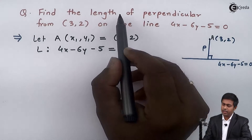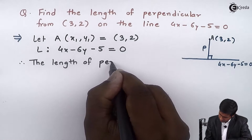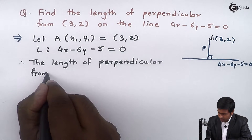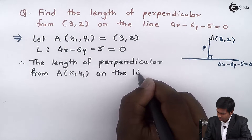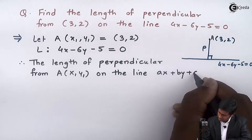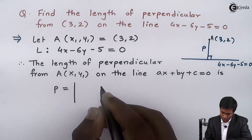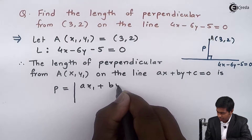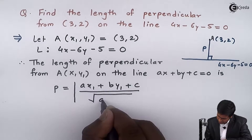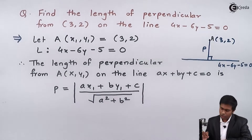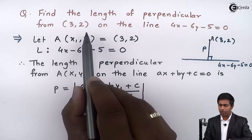To get the length of perpendicular I will use the formula. The length of perpendicular from any point A (x1, y1) on the line Ax plus By plus C equal to 0 is given by the formula: p equal to the modulus of (A·x1 plus B·y1 plus C) upon square root of (A squared plus B squared).